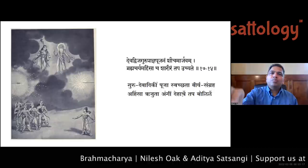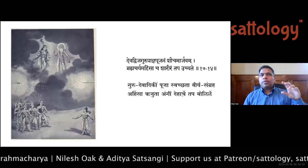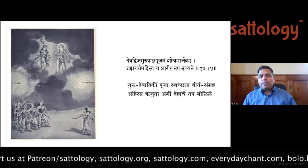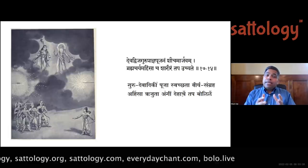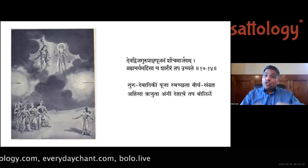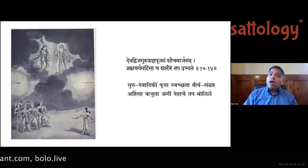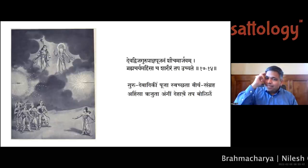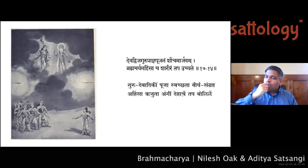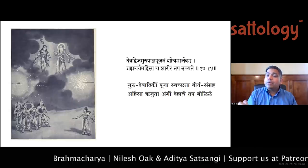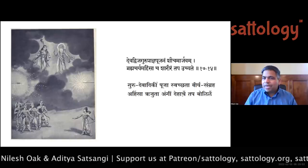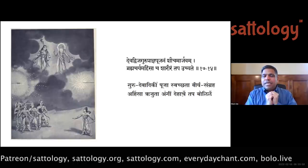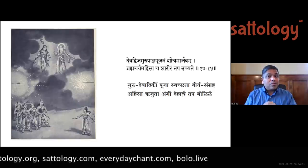Arjuna can take it back — and he does. But Ashwatthama cannot take it back. So Ashwatthama asks what to do, and Krishna says: somewhere it has to go, it has to carry out some purpose. The brahmastra, once set up in a particular direction, has to do something.